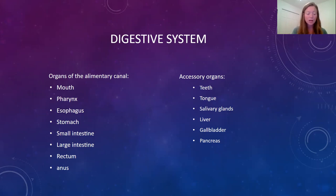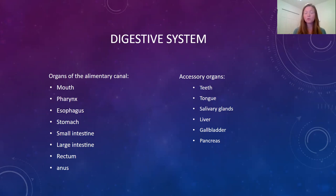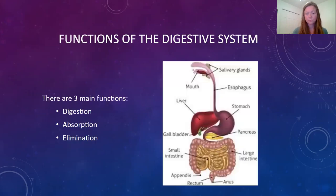The alimentary canal includes the mouth, pharynx, esophagus, stomach, small and large intestines, rectum, and anus. Our accessory organs include the teeth, tongue, salivary glands, liver, gallbladder, and pancreas. Digestion is a chemical and mechanical process in which food is broken down and nutrients are taken out. To recap the three main functions of the digestive system: digestion, absorption, and elimination.